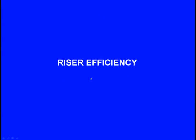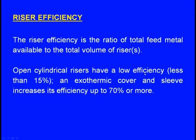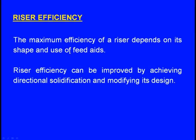The riser efficiency is the ratio of the total feed metal available to the total volume of the riser. This total feed metal available for the purpose of feeding is always less than the total volume of the riser, because part of the liquid metal in the riser solidifies before it could feed the casting. Open cylindrical risers have a low efficiency of less than 15%, whereas a cylindrical riser with an exothermic cover and sleeve will have a riser efficiency of more than 70%. The maximum efficiency of a riser depends on its shape and the use of feed aids.